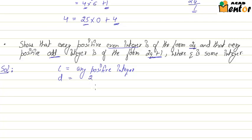So let's suppose C is any positive integer and D is 2. We've assigned value of 2 to D because we have to express C in terms of 2Q or 2Q plus 1.